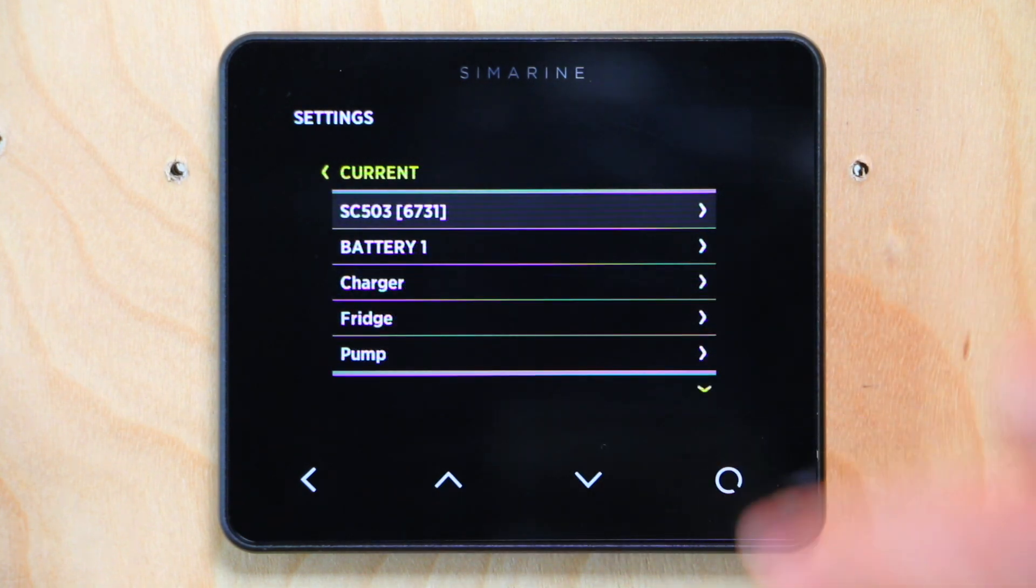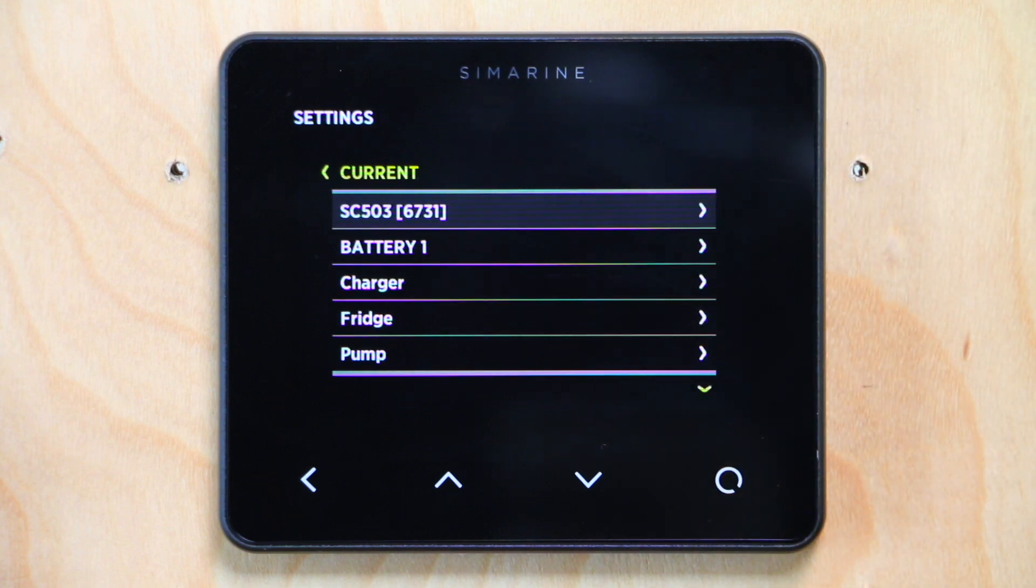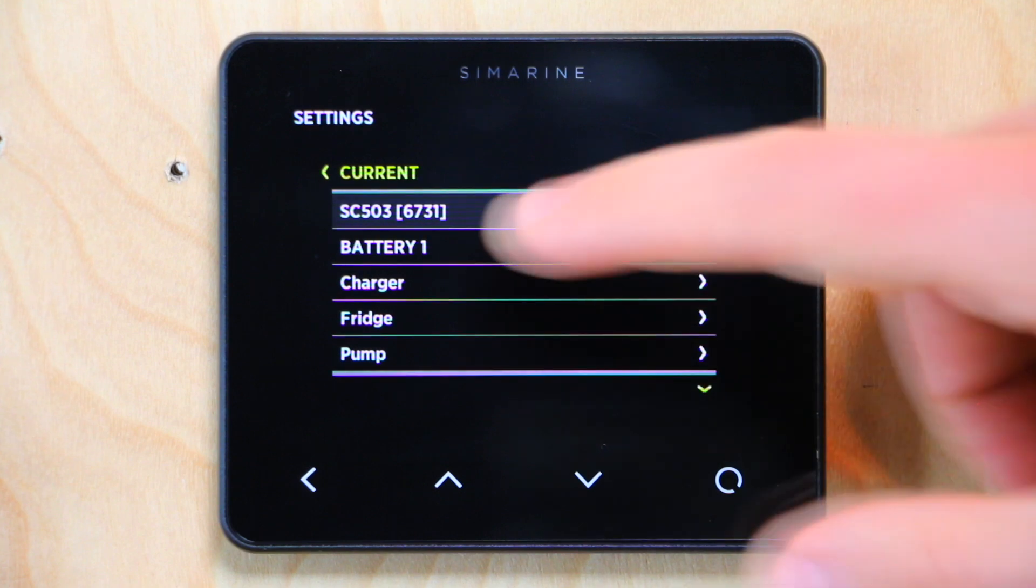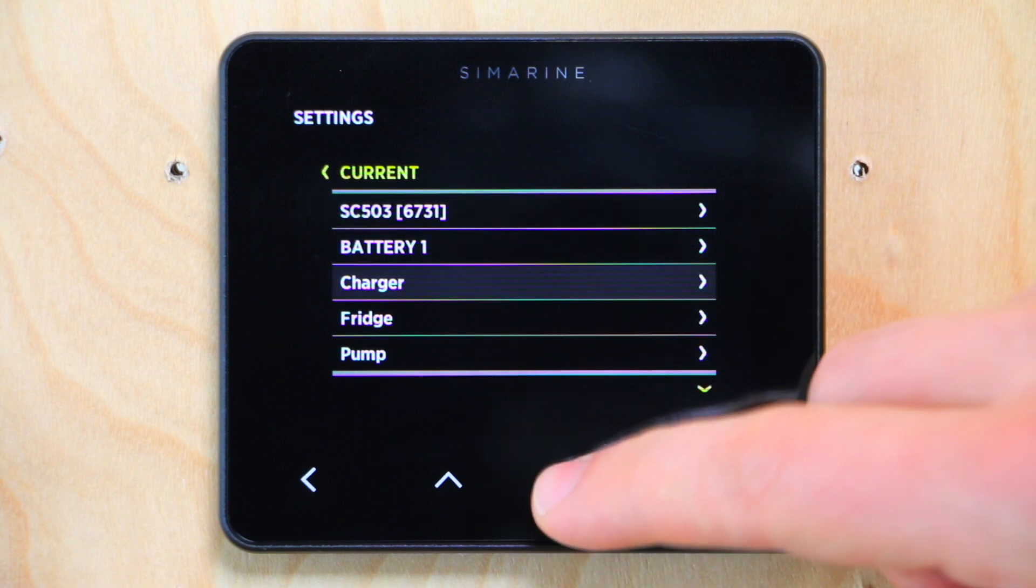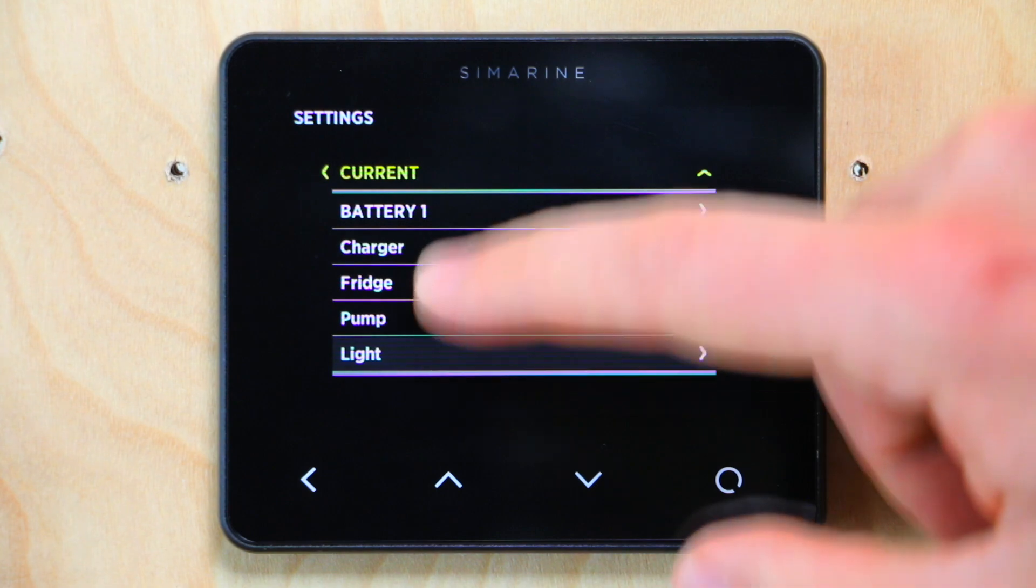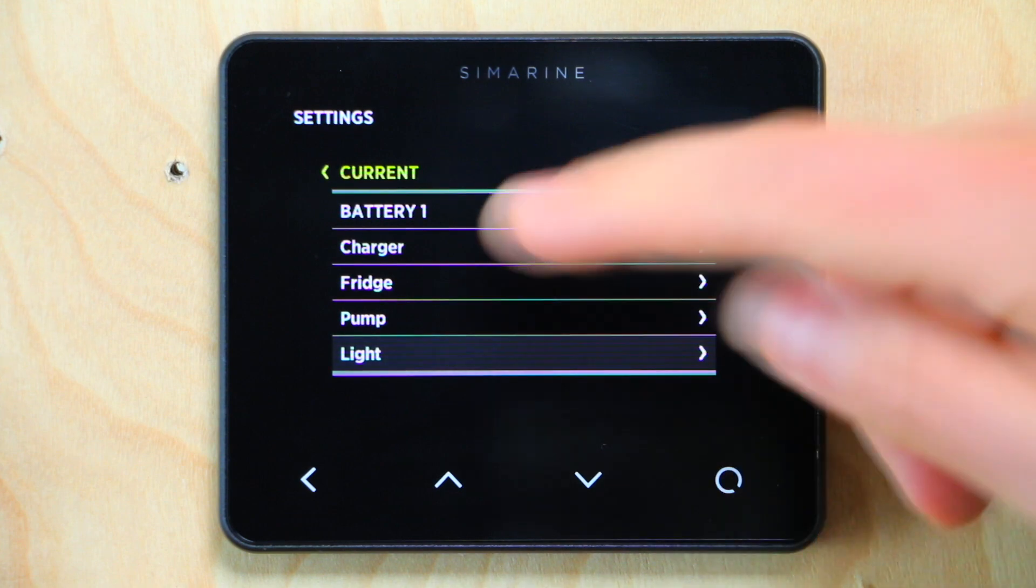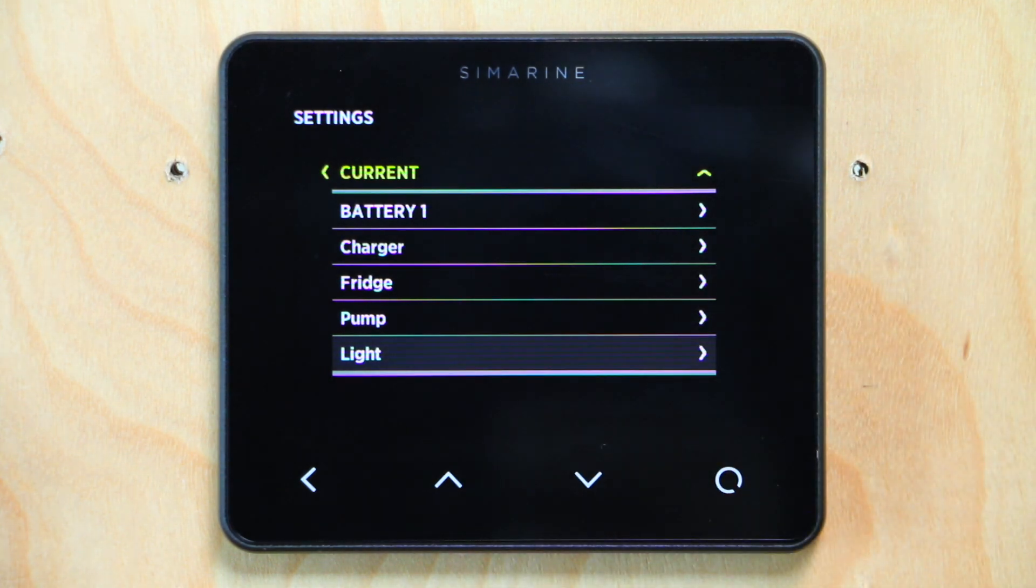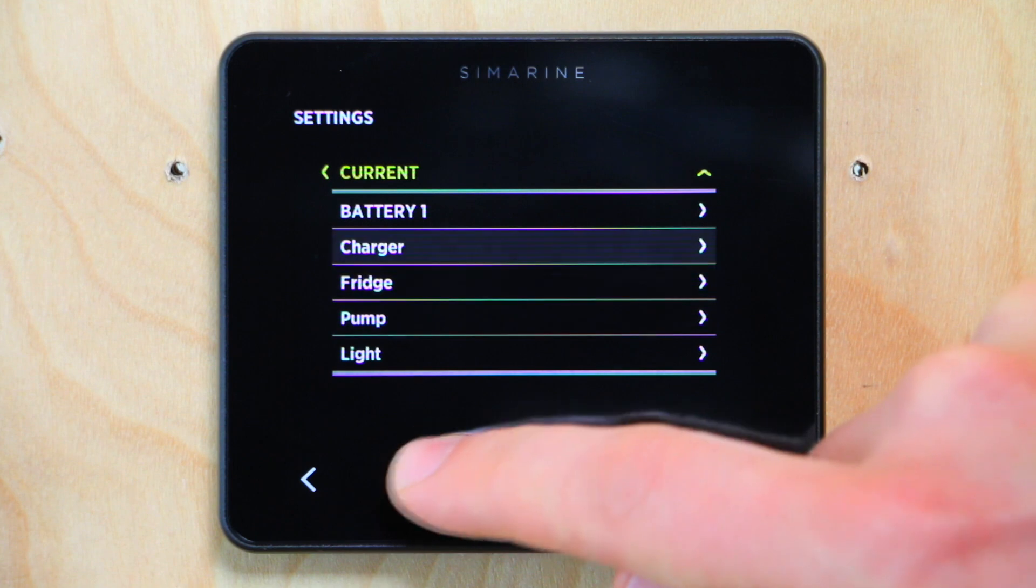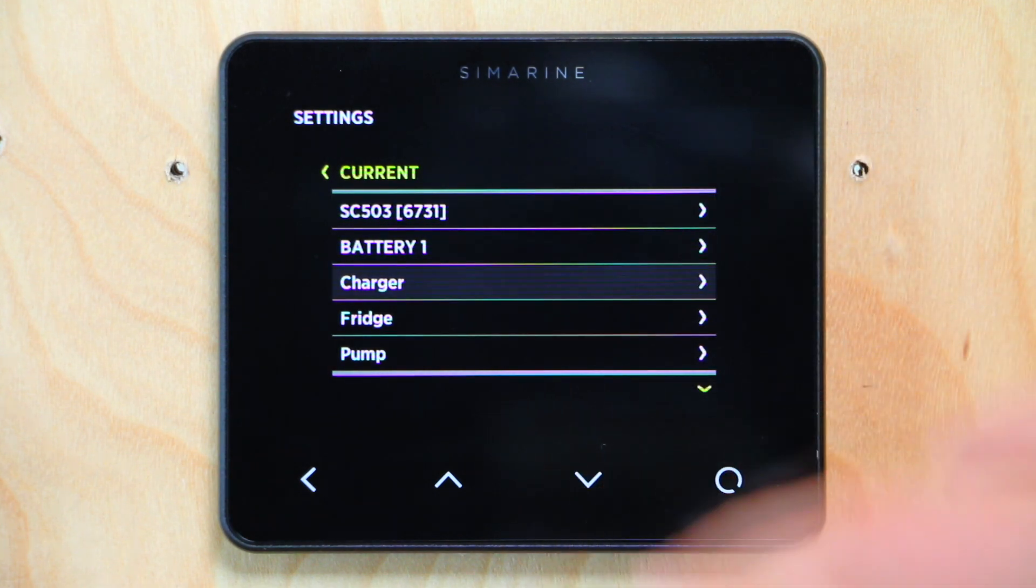Let's dive into current and I'll show you what I set up here. When you select current, it's going to pull up all of your current sensors. We have our main shunt, our 500 amp shunt on the main battery, and then we have the quadro shunt showing up here. It's a little bit confusing because I renamed each shunt in the last video as the item that's running through it. Number one is charger shunt, number two is fridge shunt, three is pump and shunt four is light. If I had not renamed those, they would show up with a serial number and a part number.